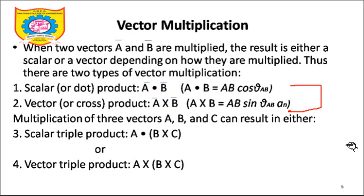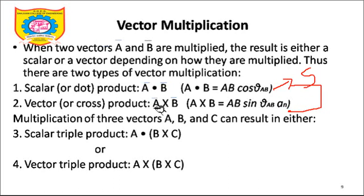See why the name is scalar product or dot product. If you have a dot product between two vectors, the resulting entity will be a scalar one — that's why dot product results in a scalar. Remember this. Before dealing with any of these multiplications, understand the basic difference between them. The dot product will result in a scalar. Vector or cross product A̅ cross B̅ will result in a vector.